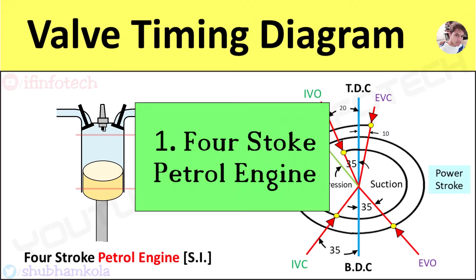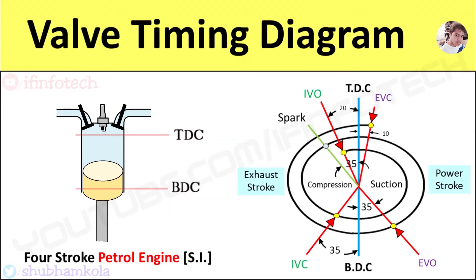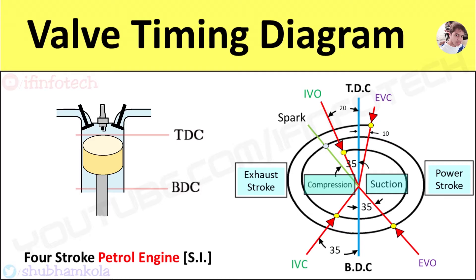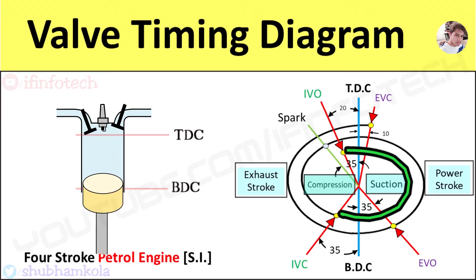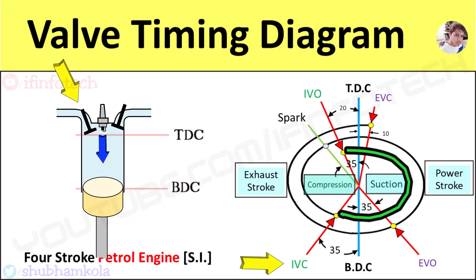Here I have drawn the sketch of the actual valve timing diagram for the SI four-stroke engine. In this cycle, there are mainly four strokes: suction stroke, compression stroke, power stroke, and exhaust stroke. The inlet valve opens 20 degrees before the TDC position of the piston, and during the suction stroke pressure inside the cylinder is atmospheric. When the piston moves from TDC to BDC, volume increases creating a pressure difference inside the engine cylinder, causing the petrol-air mixture to enter and fill the cylinder completely. The inlet valve closes at 35 degrees after BDC.